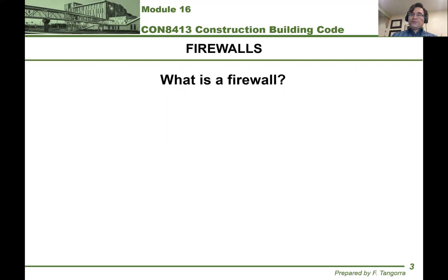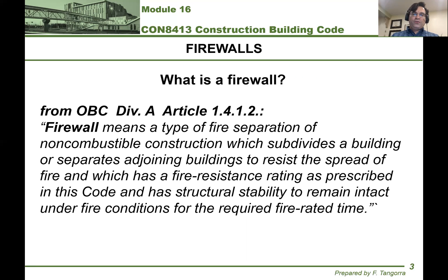Firewalls are quite interesting, but let's look first at how the building code specifically identifies and defines firewall. If we're looking for a definition, you know that we go to Division A, Part 1. In this case, we would find the definition for firewall in Article 1.4.1.2. Firewall means a type of fire separation of non-combustible construction which subdivides a building or separates adjoining buildings to resist the spread of fire, which has a fire resistance rating as prescribed in this code.